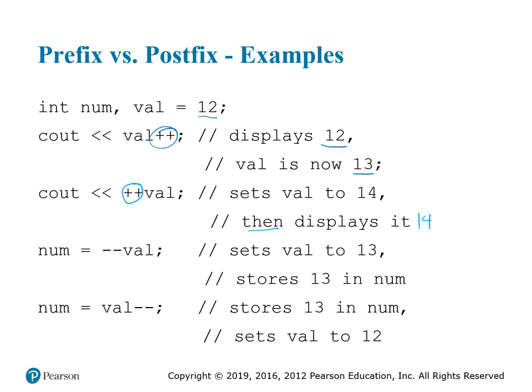You can also use these with assignment statements. If we put minus-minus ahead of val — val is 14 — we take one away, set it to 13, and store 13 in the variable num. With val minus-minus, we still store 13 in num, but then decrement val after the fact, so we end with num equals 13 and val equals 12. If that's a little confusing, it is to most beginning C programmers — you just have to practice using it both ways.